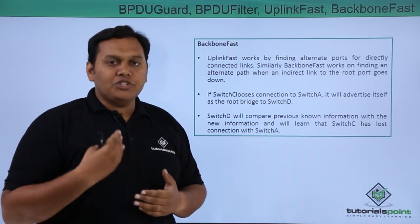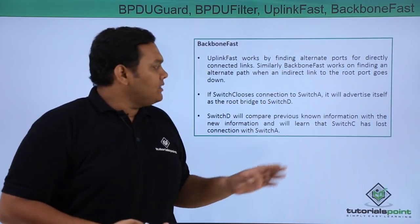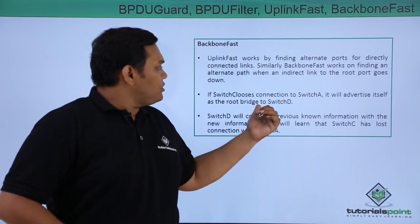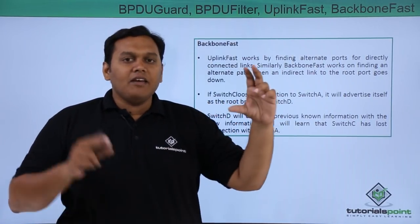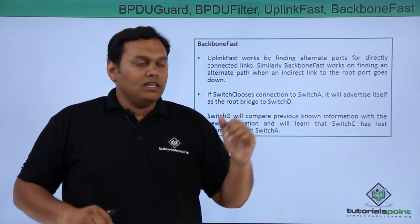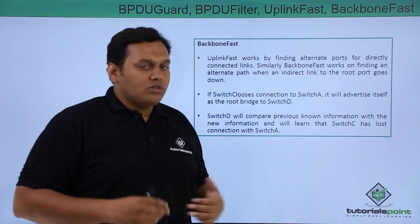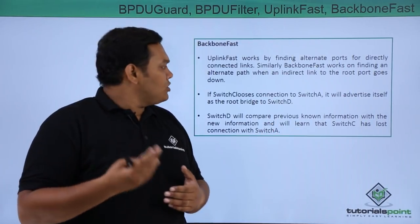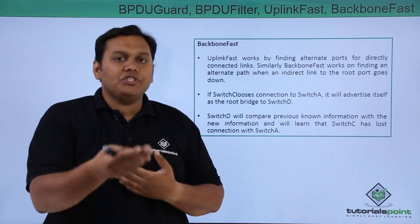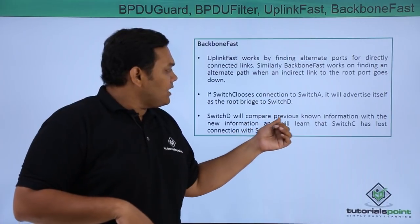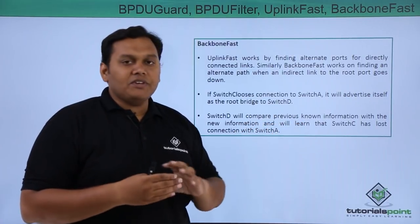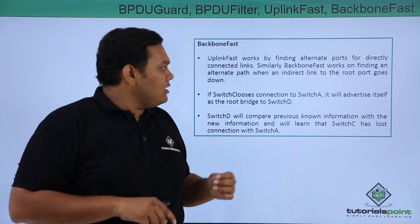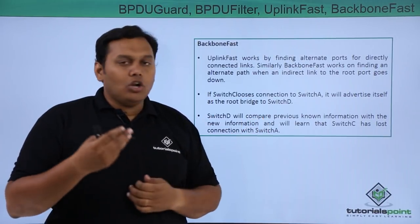If switch C loses its connection to switch A, it will advertise itself as the root bridge to switch D. Switches A, B, C, and D are available in this topology. Switch D will then compare this advertisement with previous information it holds and come to know that the switch A connection is lost.